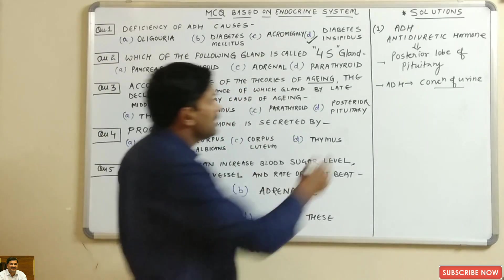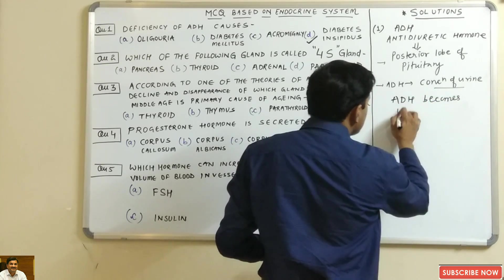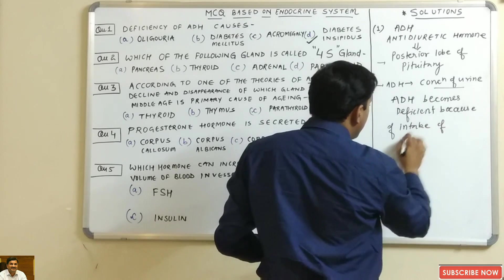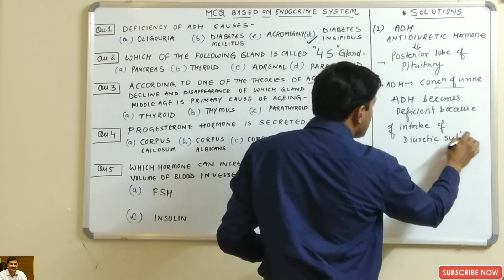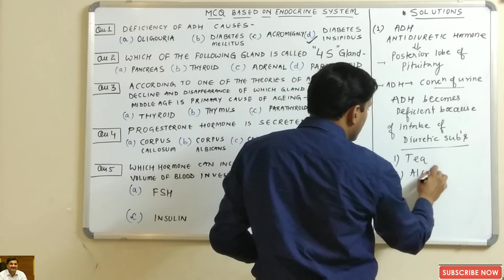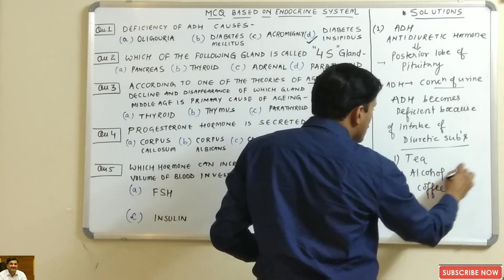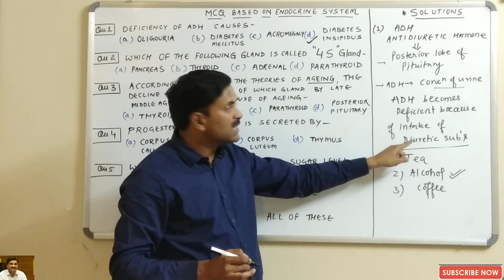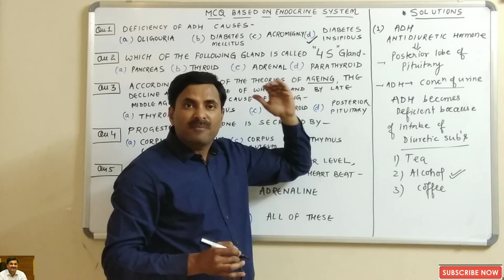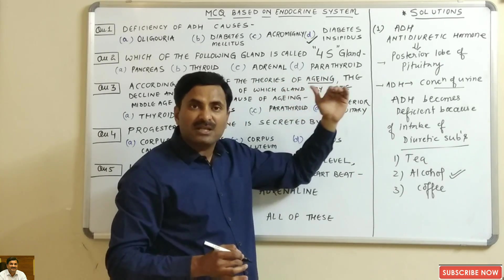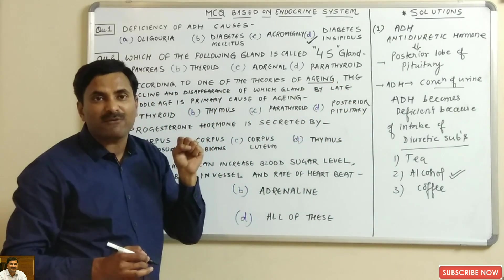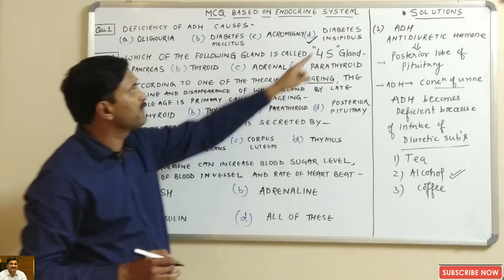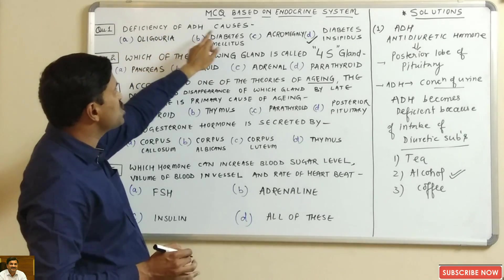Now, what causes deficiency of ADH in the body? ADH becomes deficient because of intake of diuretic substances such as tea, alcohol, and coffee. The most drastic is alcohol, followed by coffee, then tea. These reduce ADH levels, causing the DCT to fail to reabsorb water, leading to polyuria — the major symptom of diabetes insipidus.